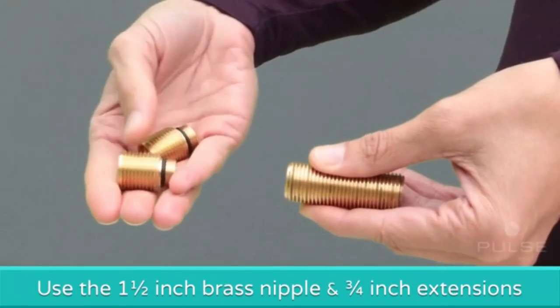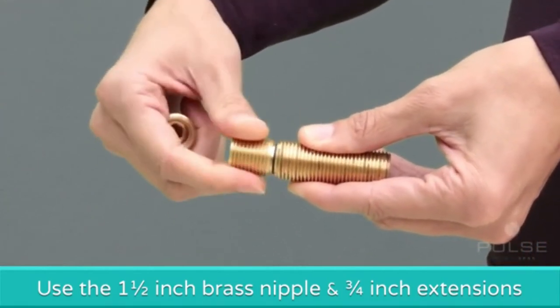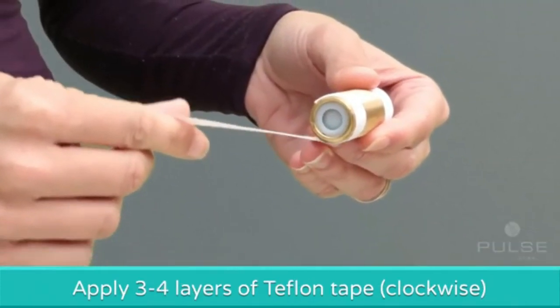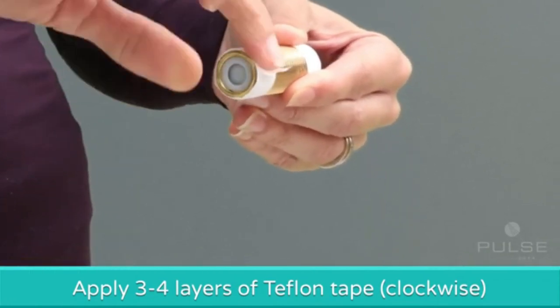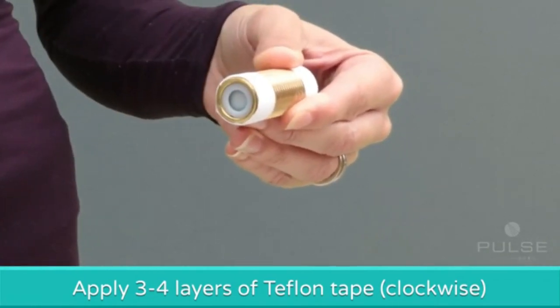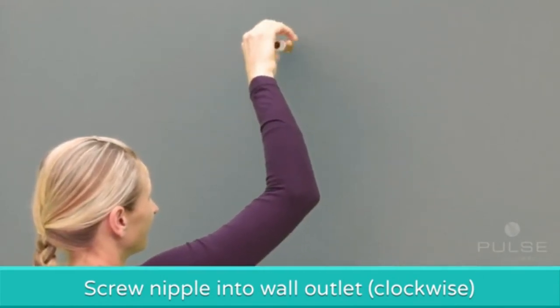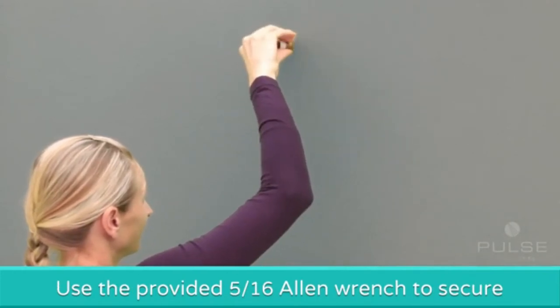Once you establish your measurement, use the provided inch and a half brass nipple and two three-quarter inch brass nipple extensions. Use three to four layers of provided Teflon plumbing tape and apply clockwise to the threaded ends of the nipple. Tighten the nipple clockwise to the shower wall outlet. Without damaging the final half inch of threads, use the provided Allen wrench to secure.